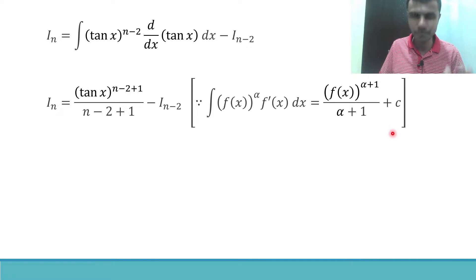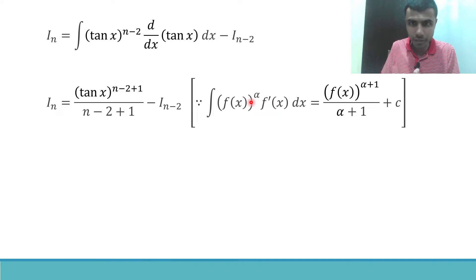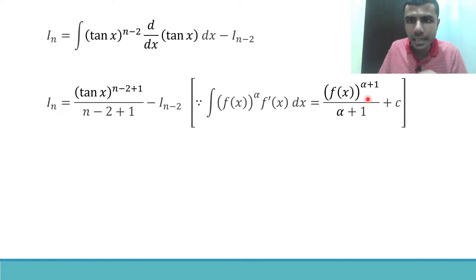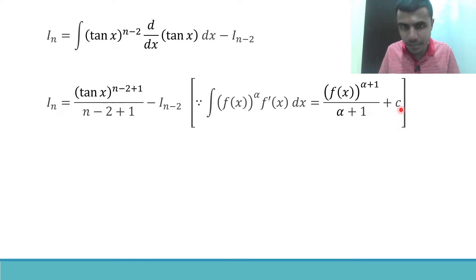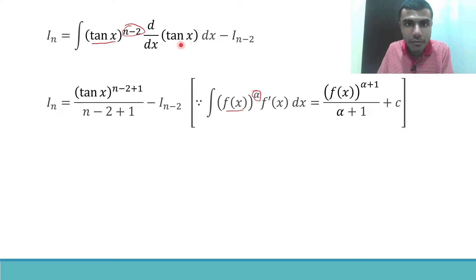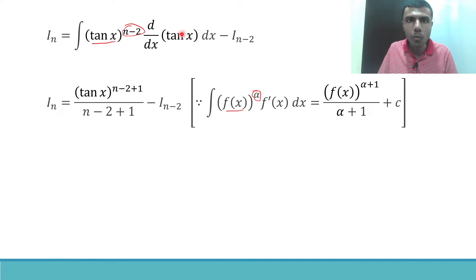Here f(x) = tan x, α = n−2, and f'(x) = d/dx(tan x) = sec² x. The situation exactly matches the formula. So applying it: the integral of (tan x)^(n-2) · d/dx(tan x) gives (tan x)^(n-2+1) / (n-2+1) = tan^(n-1) x / (n-1). No integration constant is written here since I_(n-2) follows.